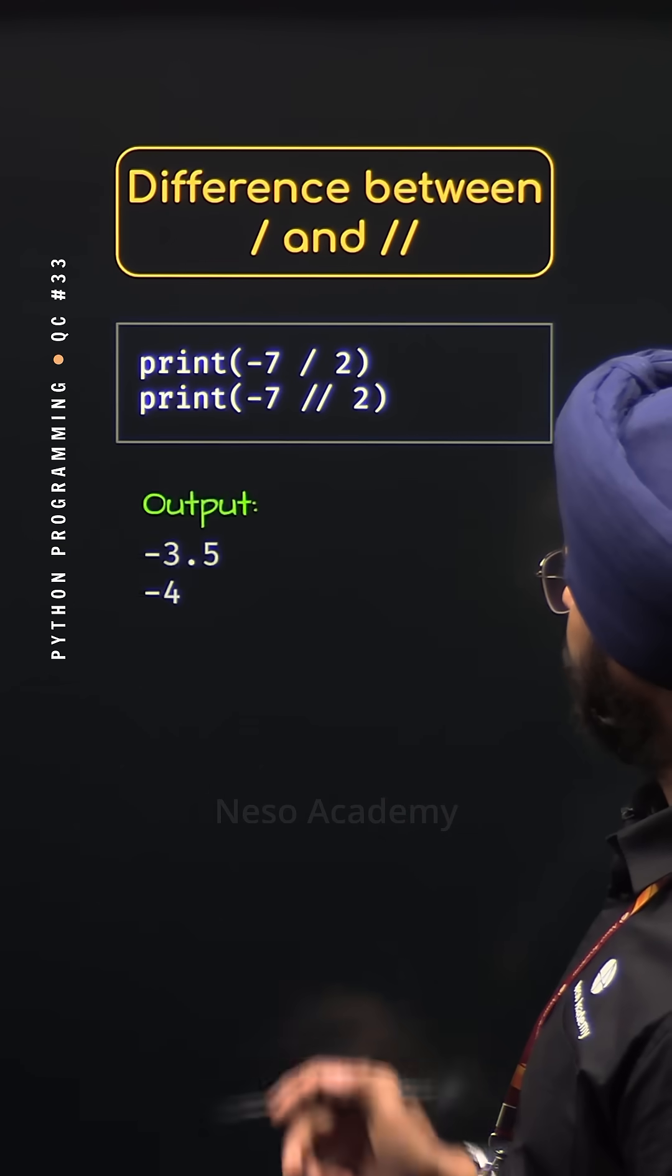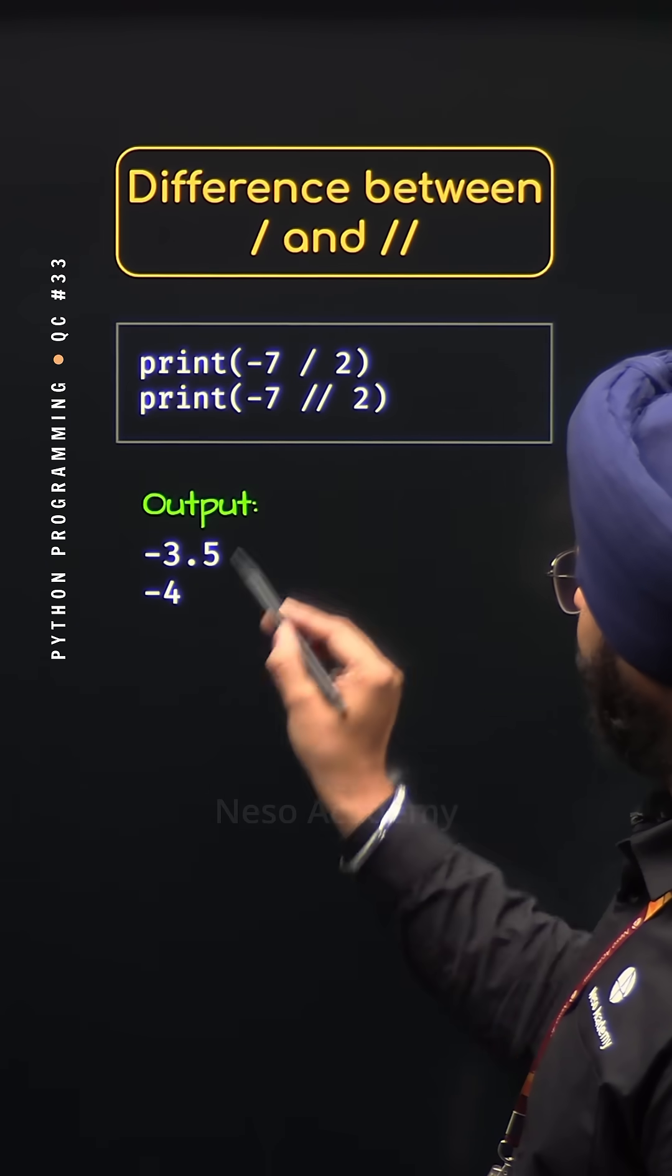In this case, we will get minus 3.5 for normal division and minus 4 for floor division.